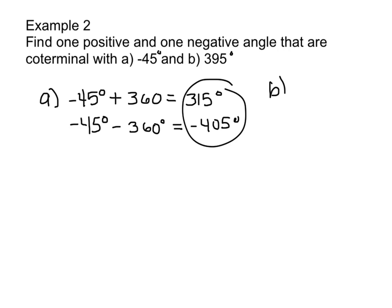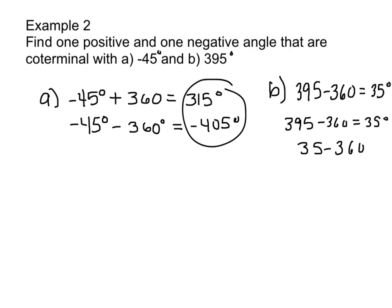For part b, 395 degrees. If I subtract 360 from 395, that gives me 35 degrees — there's my positive. But I need a negative. If I subtract 360 again from 35, that gives me negative 325 degrees. Remember, you can subtract and add 360 degrees as many times as you want until you get a positive and a negative angle coterminal to the original one.